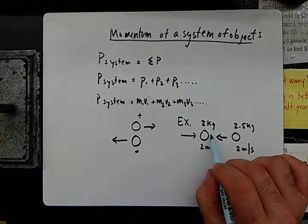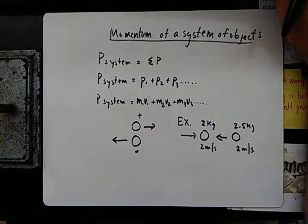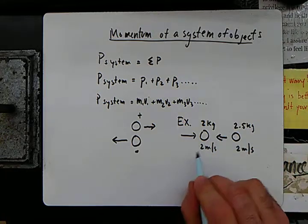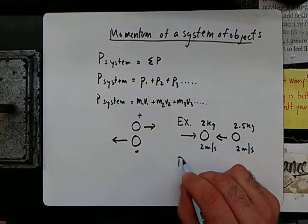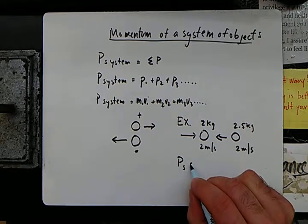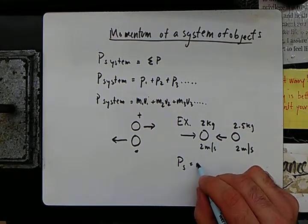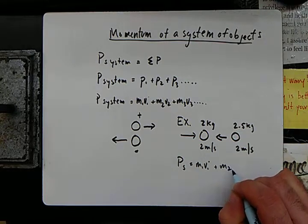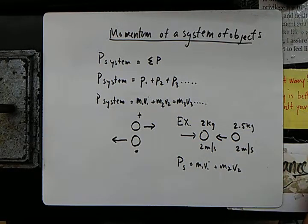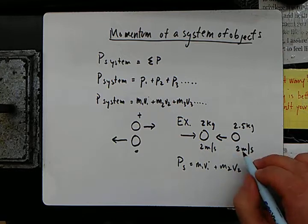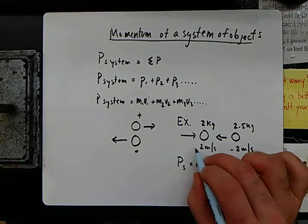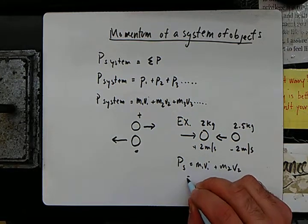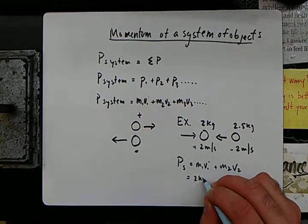If this billiard ball were to stick to this one, it becomes a single system. So let's look at the total momentum of the system: P_system equals m1v1 plus m2v2. It looks like I'm calling this one negative and this one positive because it is a vector. So it equals two kilograms